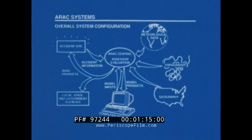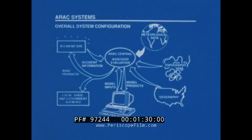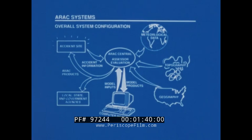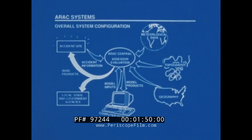In case of a release at a nuclear site, accident information is transmitted to the assessors in the ARAC Central Facility for evaluation and processing. Concurrently, meteorological data are collected and topographical and geographical databases are accessed. Model input parameters will be prepared by the assessors and the ARAC computer models are run. Model output is once more screened by the assessors before distribution to the accident site and local, state, and federal agencies.